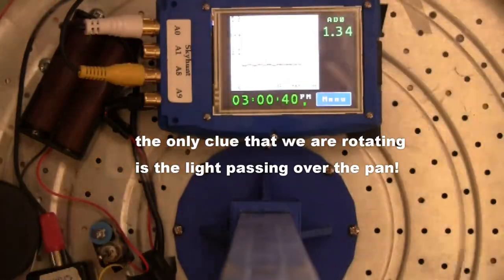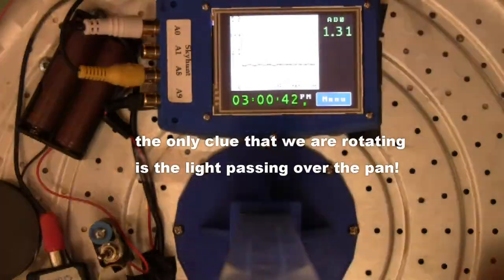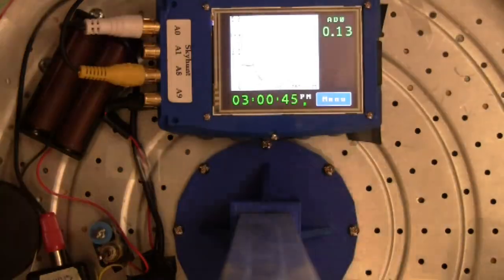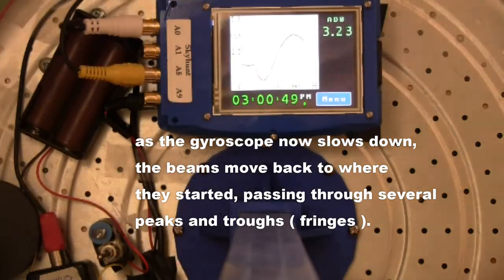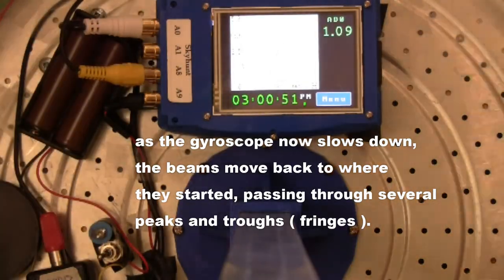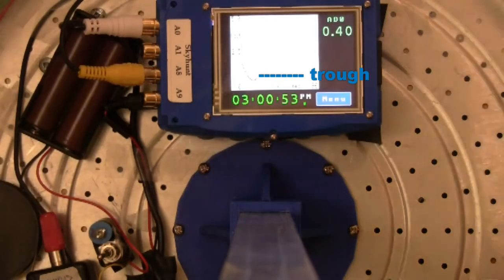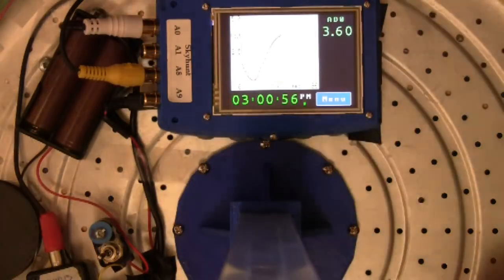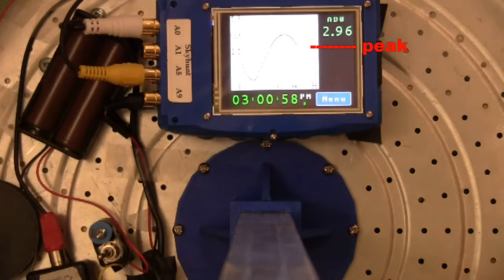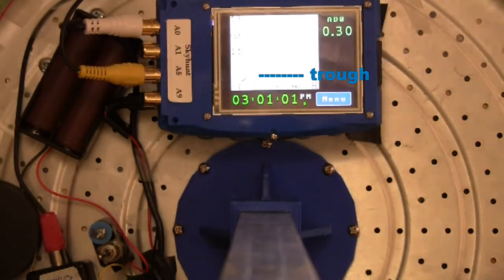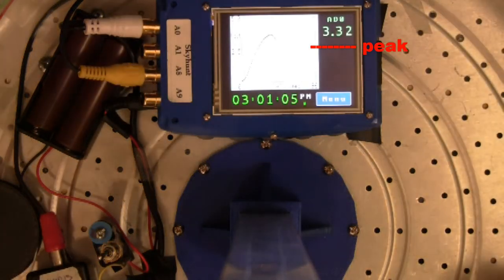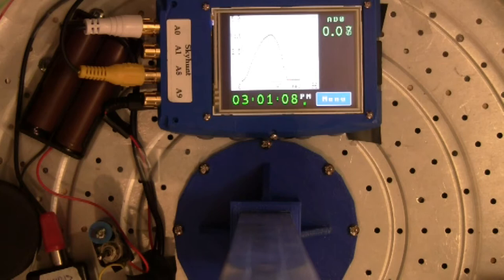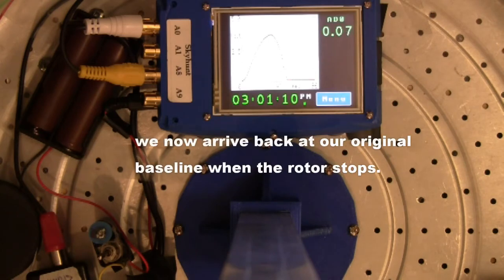The only clue that we are rotating is the light passing over the pan. As the gyroscope now slows down, the beams move back to where they started, passing through several peaks and troughs or fringes. We now arrive back at our original baseline when the rotor stops.